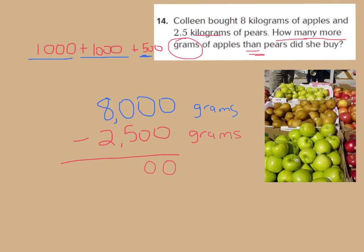I'm going to regroup from my thousands place and take away one group of a thousand and make a thousand in my hundreds place. And I know ten groups of a hundred equals a thousand, so I am taking it and making it ten minus five, which will be five hundred. And in my thousands I have seven thousand minus two thousand is five thousand. So we can say the difference of the 8,000 grams of apples and the 2,500 grams of pears, the difference would be 5,500 grams between the two different types of fruit.